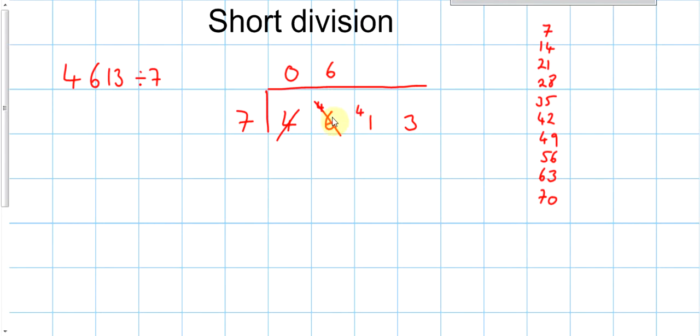OK, that's because 6 7s are 42, but we had 46, which is 4 bigger. 7s into 41 go 5, because 5 7s are 35, remainder 6.